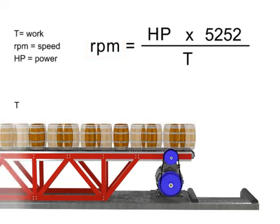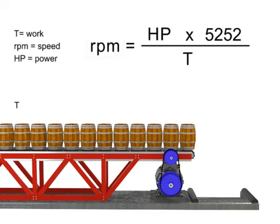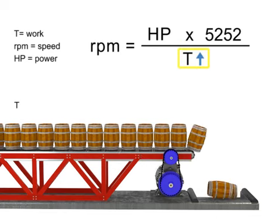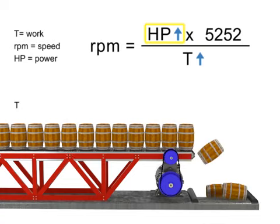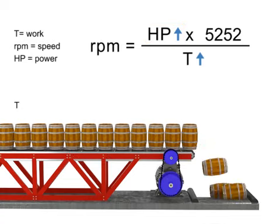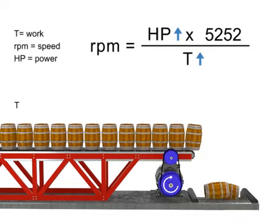Let's say we want production to increase but the speed of the conveyor to remain constant. If torque increases, horsepower also increases to compensate. This means a more powerful motor is needed to produce more torque at the same speed.